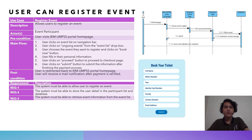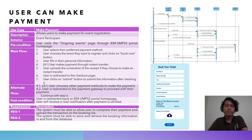The fourth use case is user can register for an event. The system must allow users to register for an event, store user details in the participant list and database, and retrieve event information from the event list. The top right shows the sequence diagram and user interface design for this use case. The fifth use case is user can make payment: the system must allow users to complete their payment and log the transaction to the booking list, and store and retrieve booking information in and from the system. The sequence diagram is depicted, and the booking pop-up UI differs slightly for paid events.